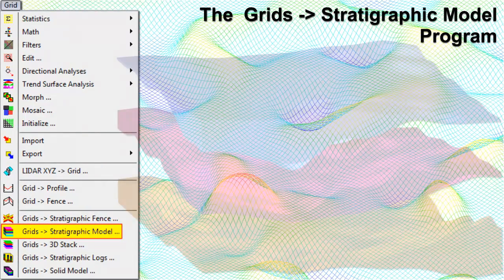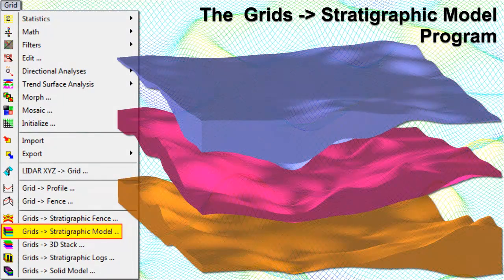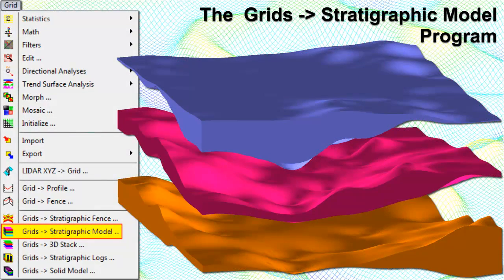The Grid to Stratigraphic Model program is used to create a 3D stratigraphic model based on a list of existing grid models. This program is designed for two types of applications: first, users who have created their grid models within other applications, such as Modflow or Surfer, and wish to use RockWorks to create stratigraphic or hydrostratigraphic diagrams; and second, users who have created their grid models within the borehole manager portion of RockWorks but need more flexibility in dealing with stratigraphic relationships, such as special manipulations within the grids.